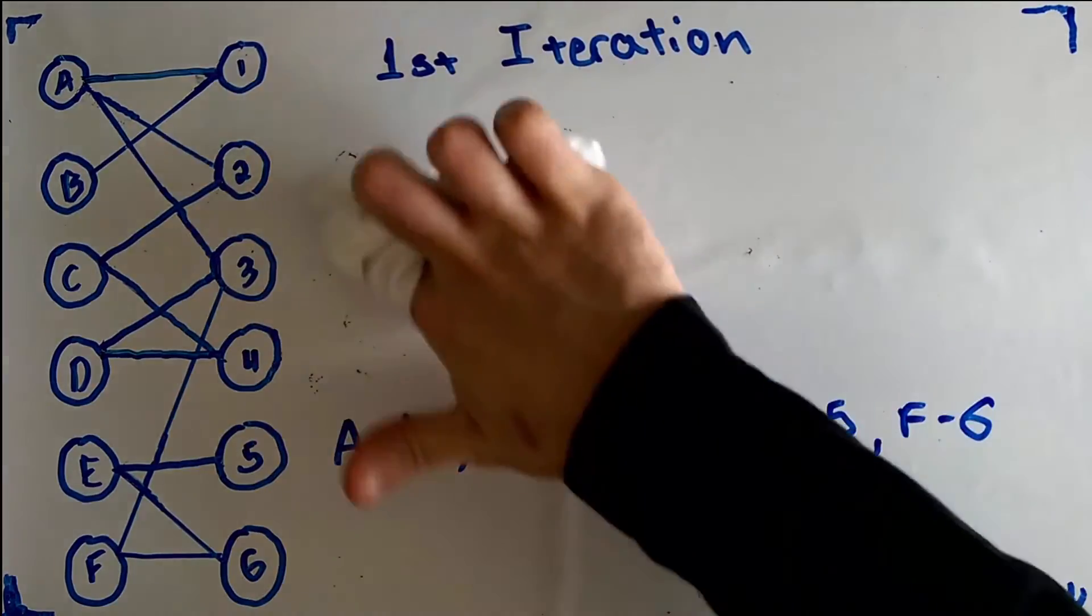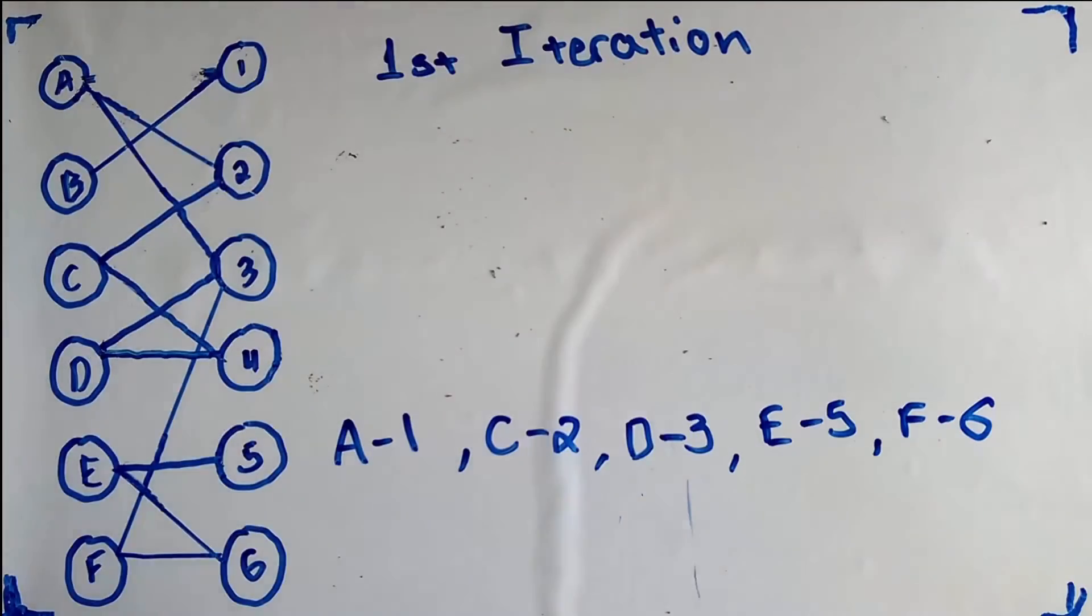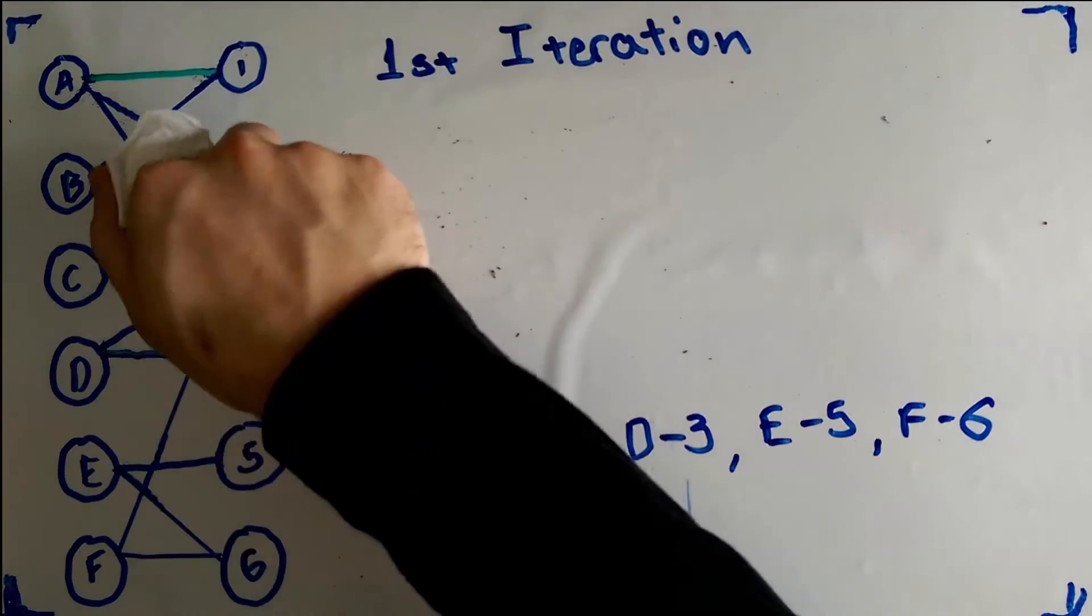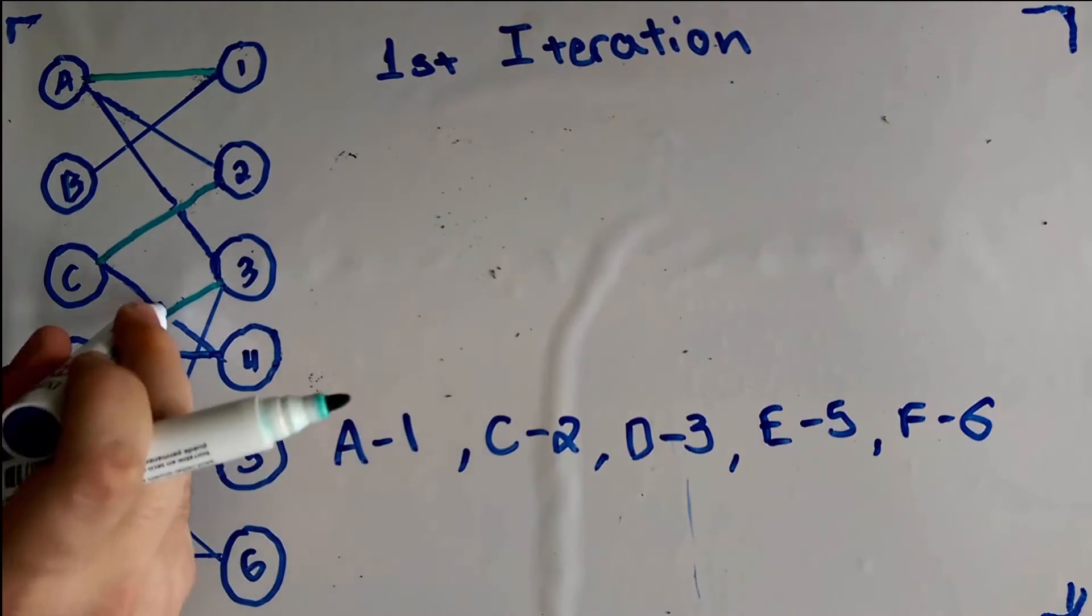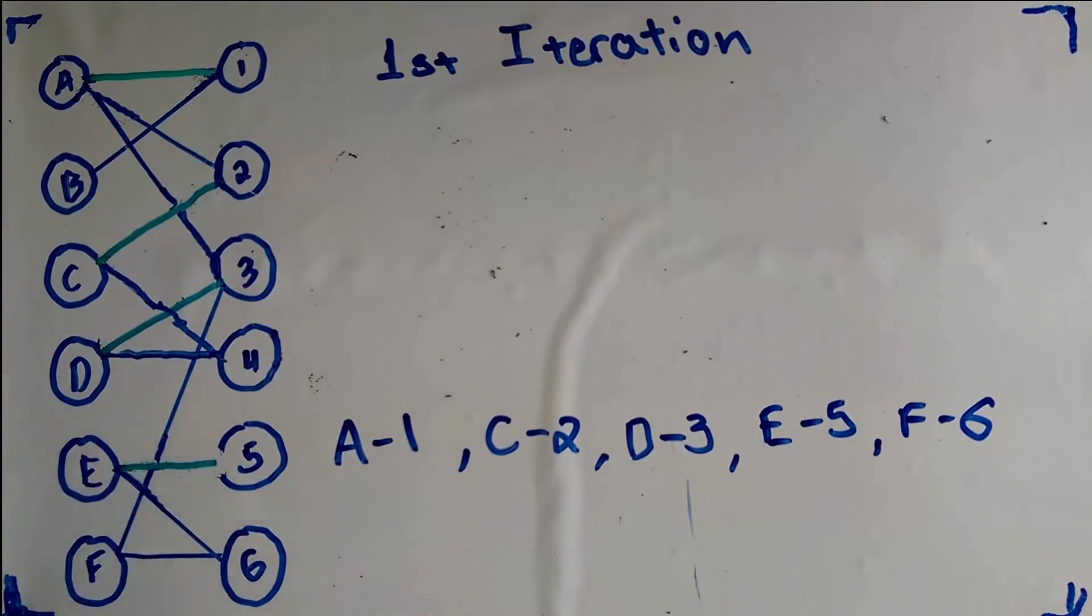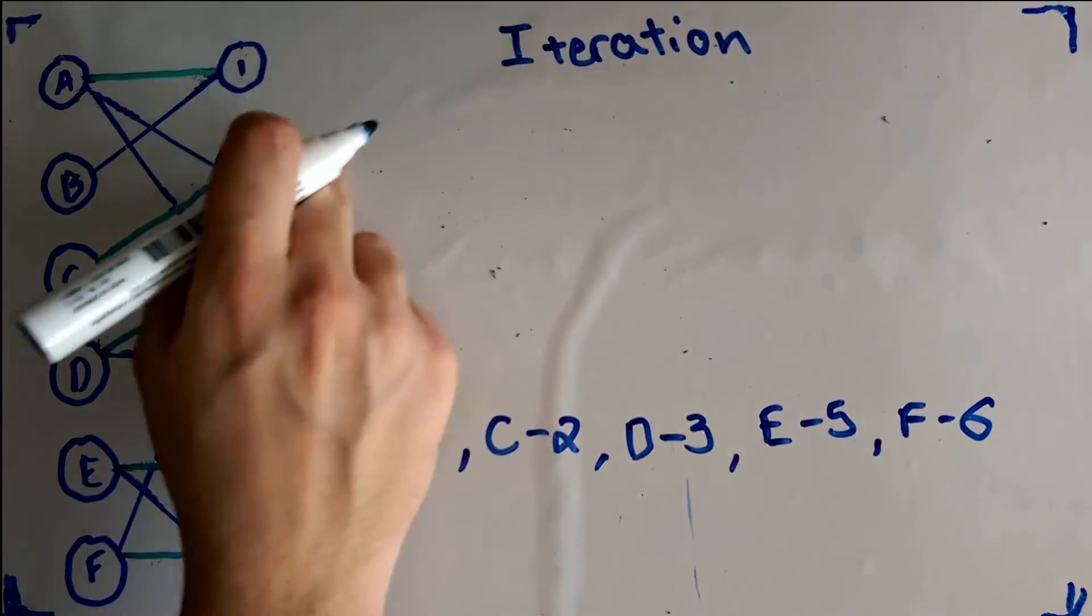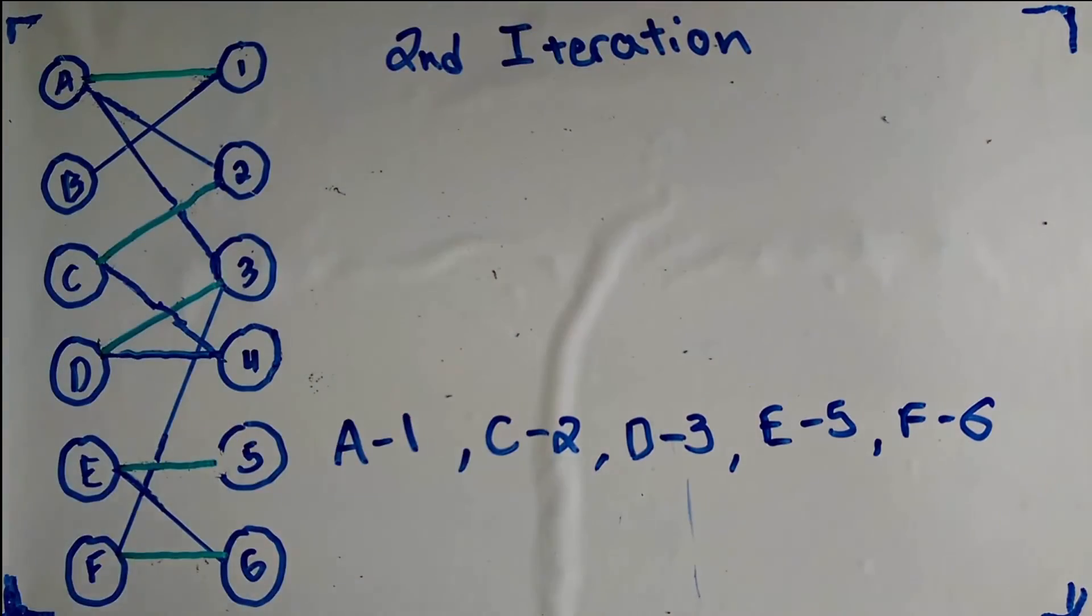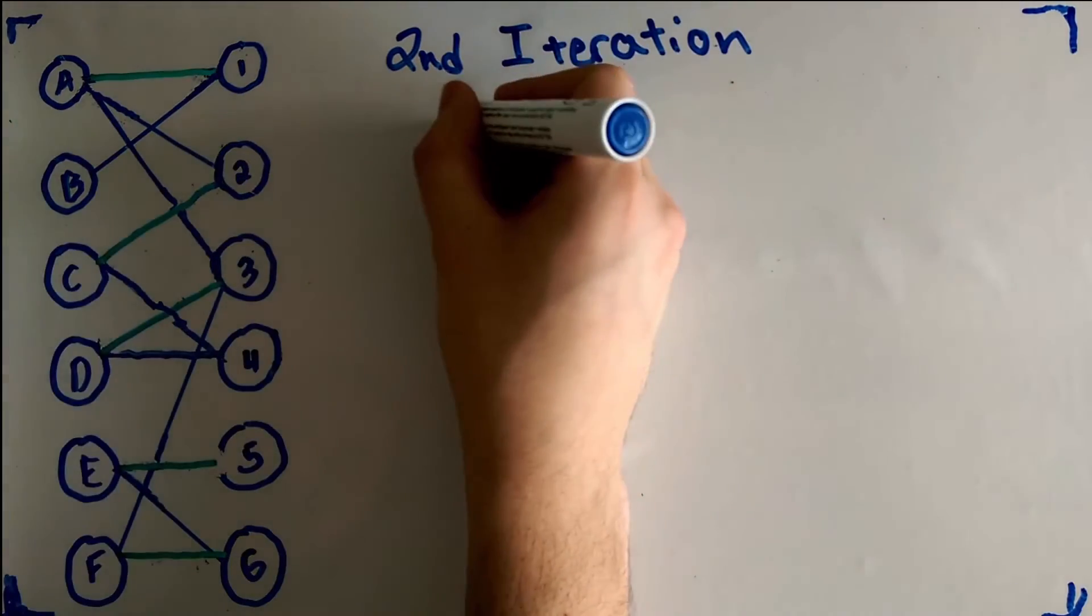To complete the first iteration, we must calculate the symmetric difference between our maximal set of shortest augmenting paths and our solution set which is currently empty. An edge that is colored green indicates that it is currently in the solution set. Because our solution set is empty, all of the edges in the maximal set can be included in our solution set. With the end of the first iteration of the algorithm, we can observe that in this case only B and 4 are left unmatched.